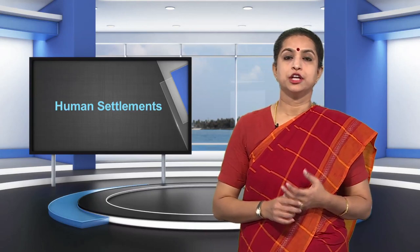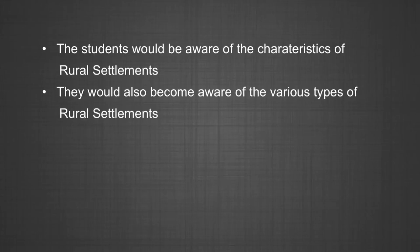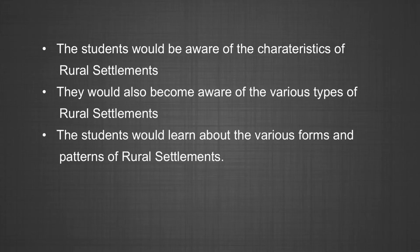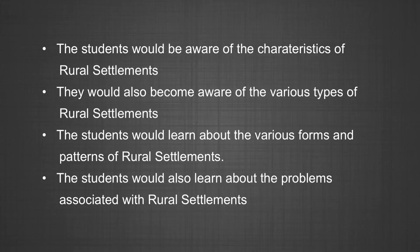By the end of the module, the following objectives will be fulfilled: you would become aware of the characteristics of rural settlements, you would also become aware of the various types of rural settlements, you would learn about various forms and patterns of rural settlements, and you would also come to know about the problems associated with rural settlements.